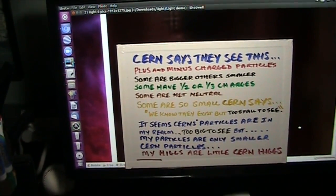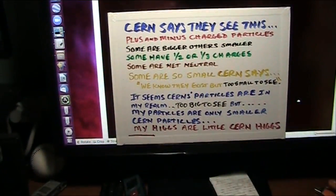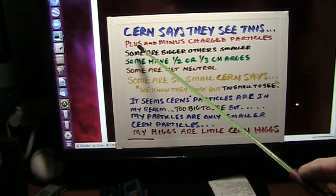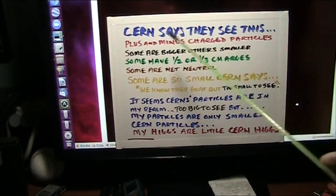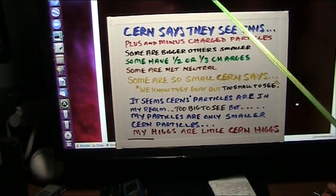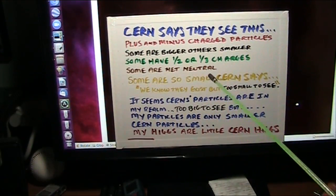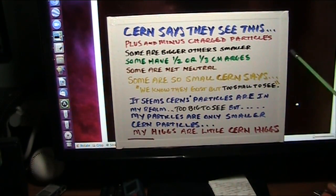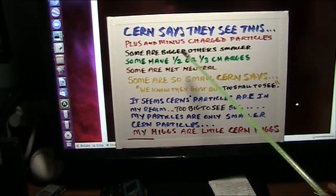Here's what CERN says. Let me put the spotlight on CERN. What does CERN say? CERN says they see these things - they see plus particles and minus particles and charge particles. They know this because they have them in force fields. If they put a positive charge it sucks it up. If they put a negative charge it pushes them away. The other ones react oppositely so they are obviously a different charge.